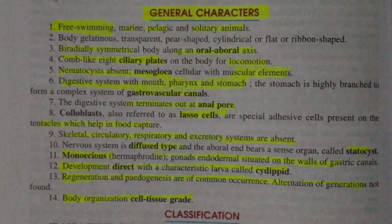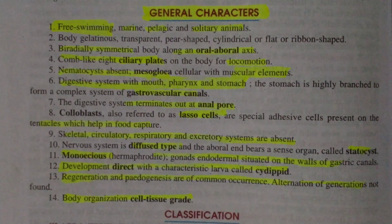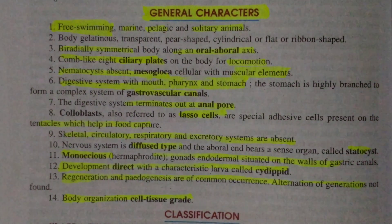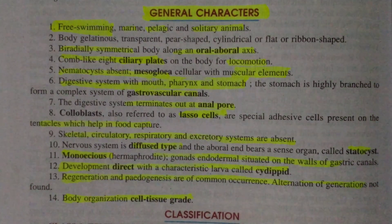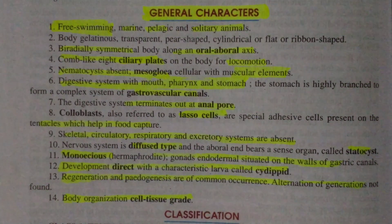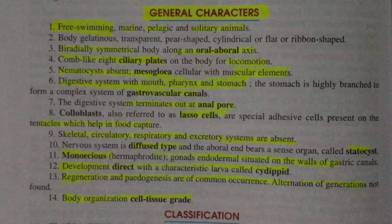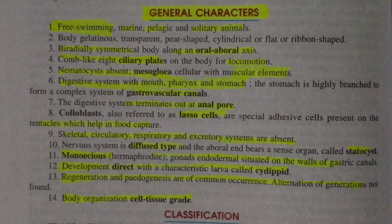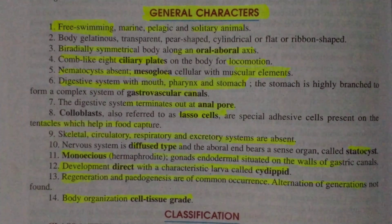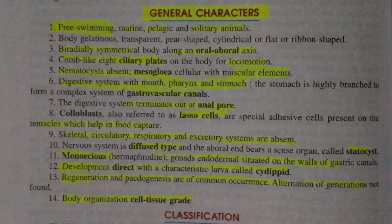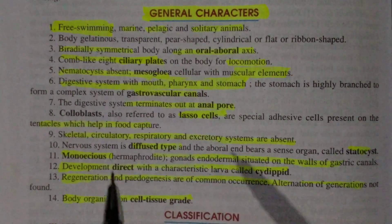In today's lecture, the minor phylum Ctenophora's salient features are included in the syllabus of BSc 5th semester under the heading of diversity of non-chordates. Salient features means we have to discuss about the general characters — salient features are also known as general characters.